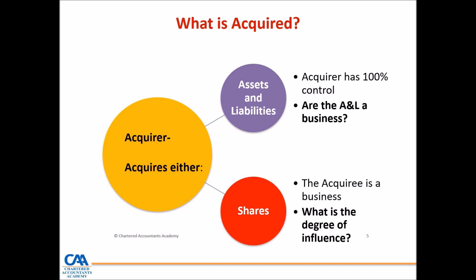Coming back to how a group starts: a group starts when an acquirer or investor acquires either assets and liabilities, or acquires shares. When assets and liabilities are acquired, they are acquired in their individual form. The acquirer obtains 100% control of those assets and liabilities. However, because we didn't acquire an entity in its fullness, there is a key issue of whether the assets and liabilities constitute a business.